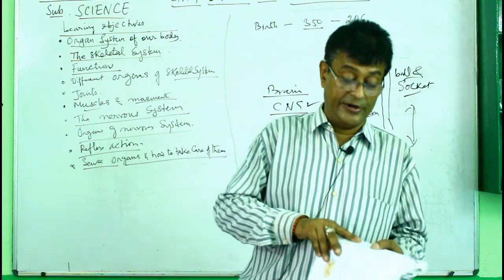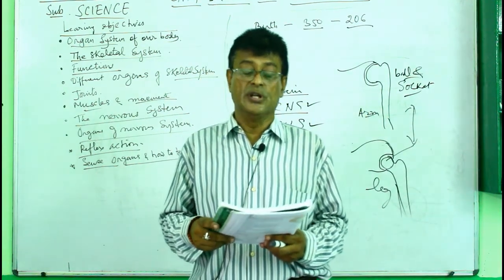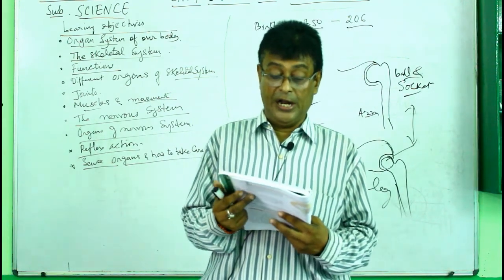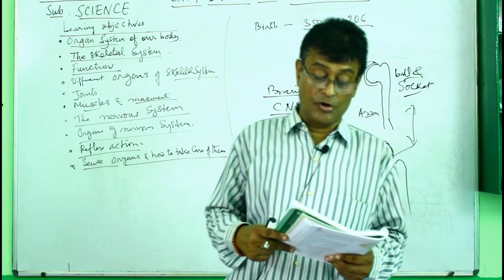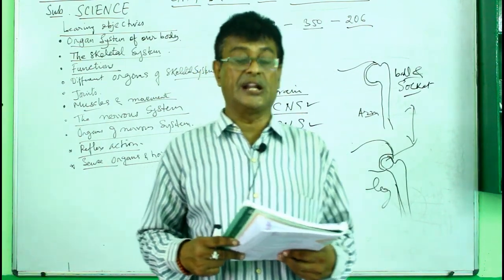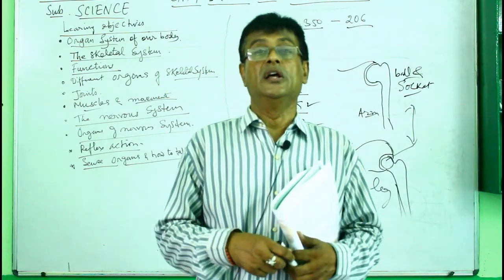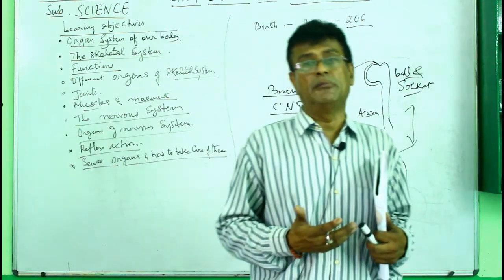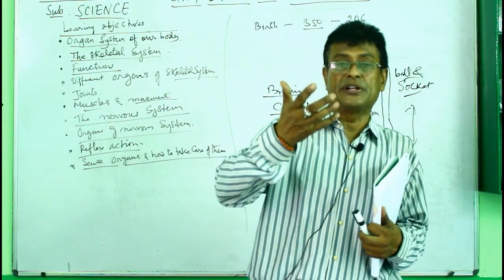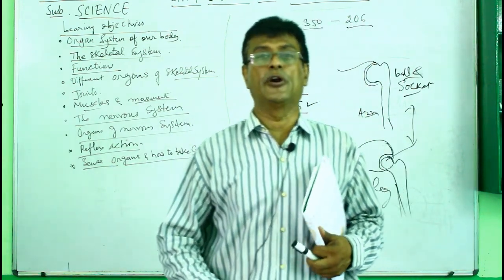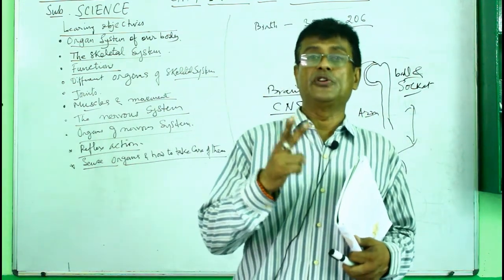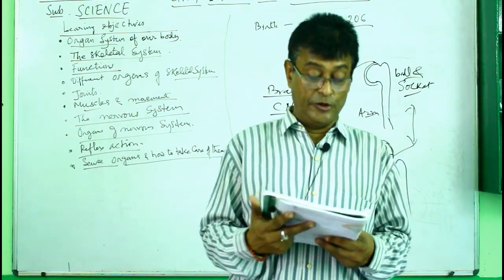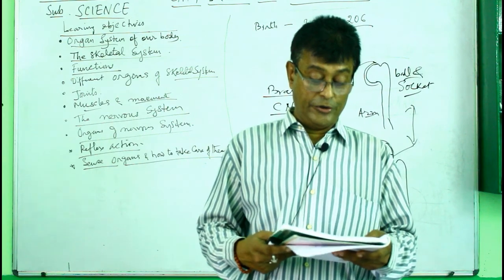In the spinal cord there is fluid which gives the message to the brain and the brain does what is required. The nerves are called neurons - the nerve cells are called neurons. There are various kinds: sensory neurons which take messages to the brain, motor neurons which take messages from the brain to the affected part of the body, and mixed neurons which do both.